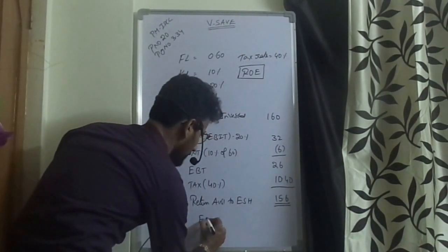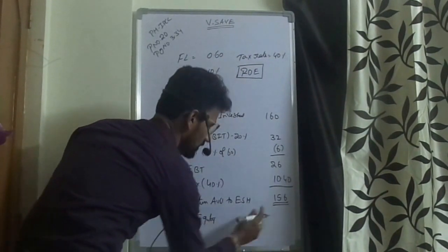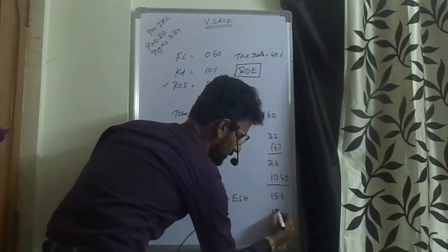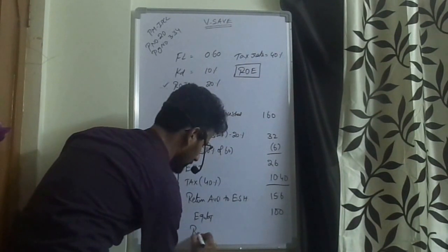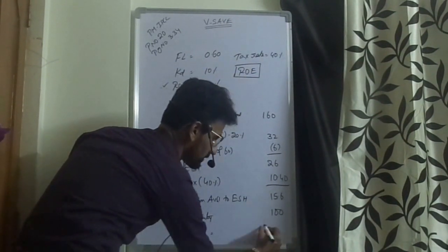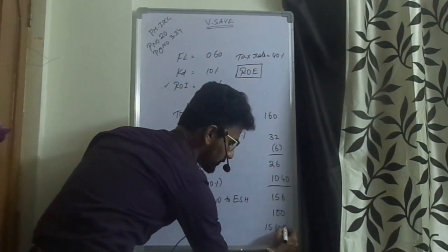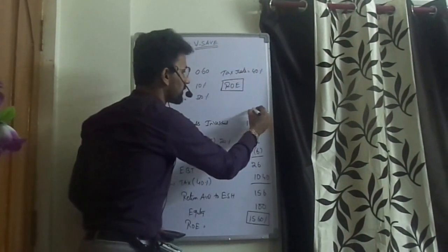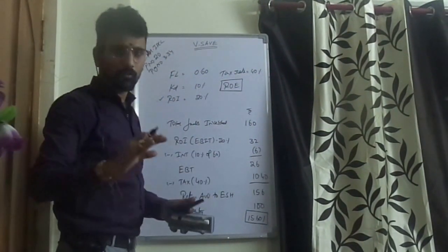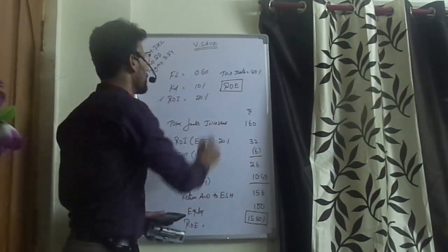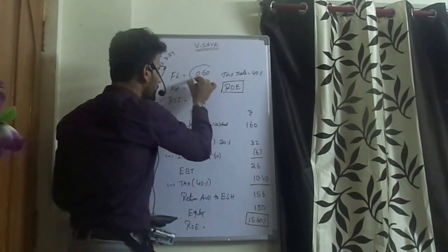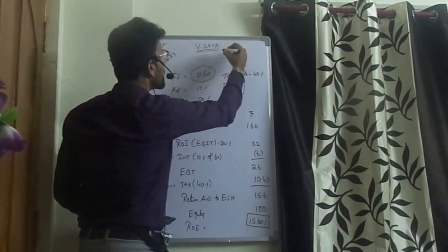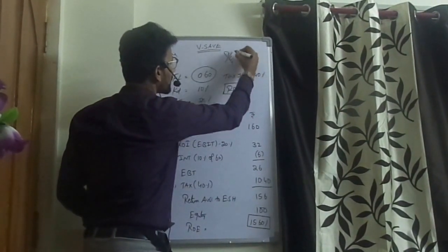Equity is 100. Hence, return on equity is 15.6%. Many of us have a phobia of remembering formulas, but without remembering any formula, this question can be solved using financial leverage to identify the debt-equity ratio.